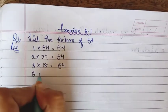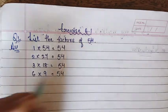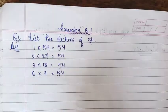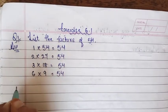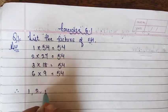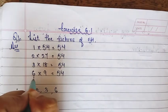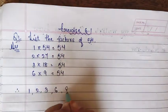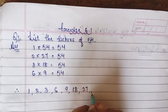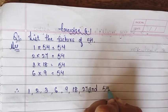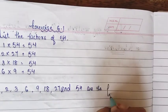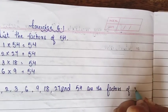And it comes in table of 6: 6 × 9 = 54. Now after that it comes in table of 9 also, but no need to write again. So here we will write our answer. Therefore the factors of 54 are 1, 2, 3, 6, 9, 18, 27, and 54.